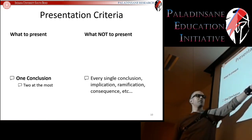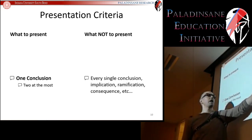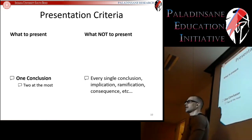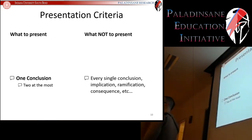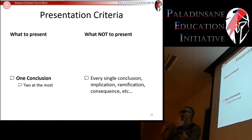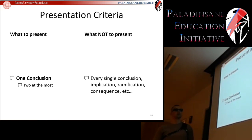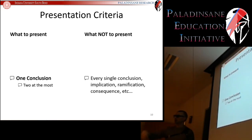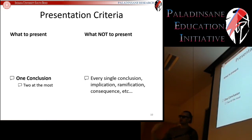What you're not going to present: every single conclusion, every implication, every ramification, every consequence — that's too much. In 20 minutes it just can't be done. When you're reading your articles, it's up to you as the critical thinking reader to pick what you think is the most important thing from that article — and that's what you present.